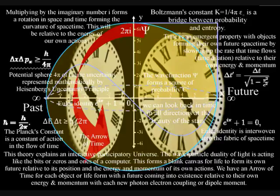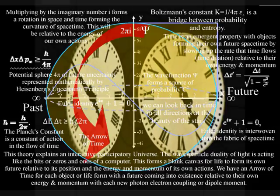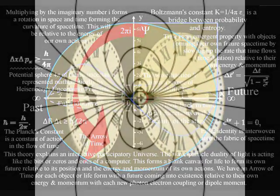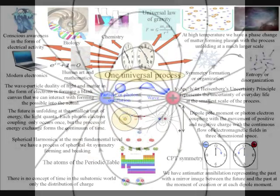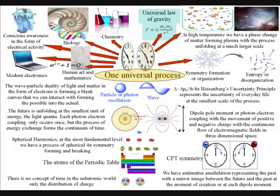Whenever the atoms of the periodic table bond and break, there is an exchange of photon energy. Therefore, at everyday temperatures, all physics, chemistry, and biology is based on this process of energy exchange.